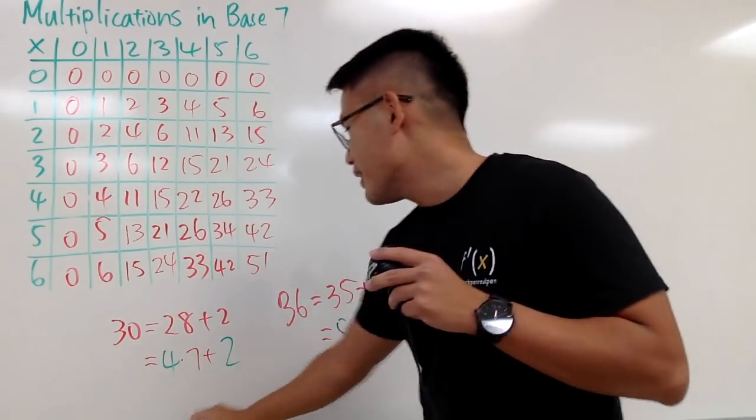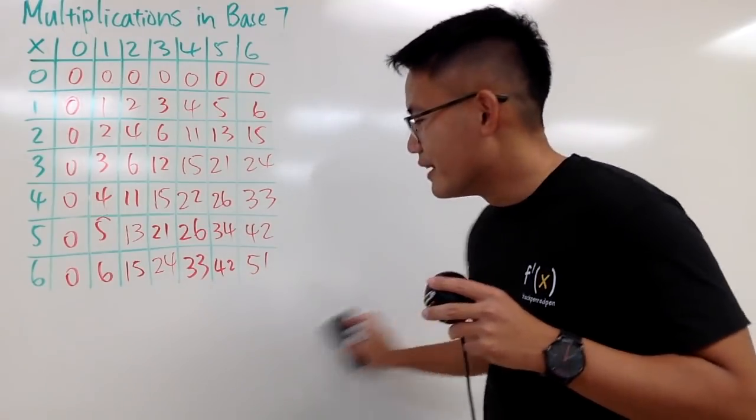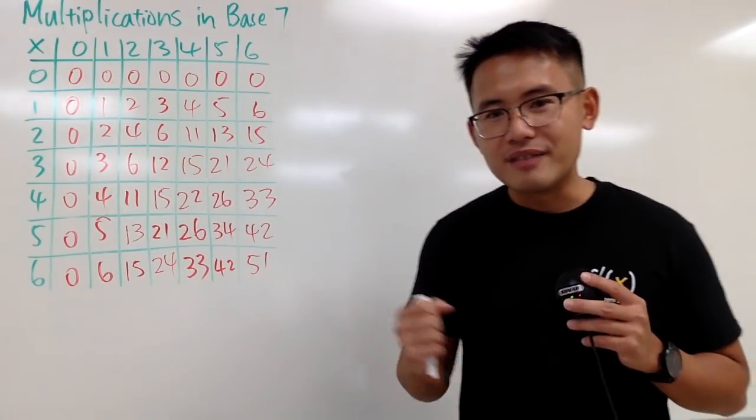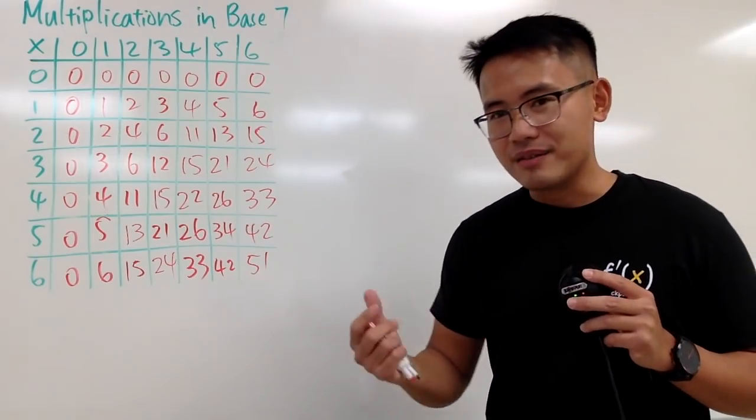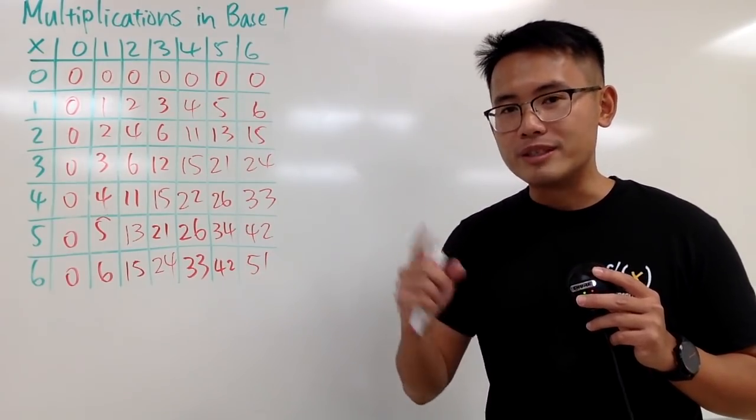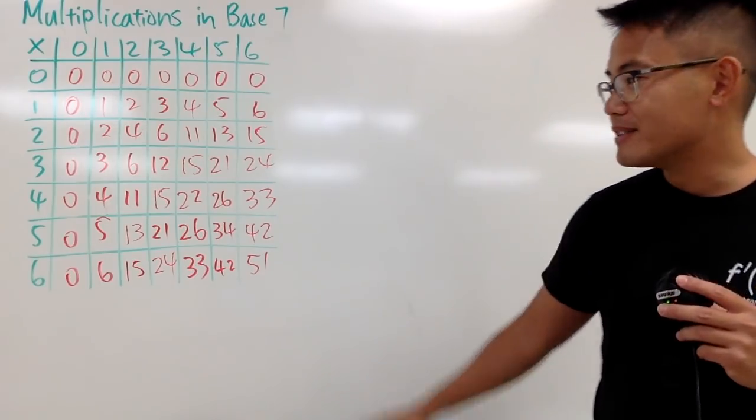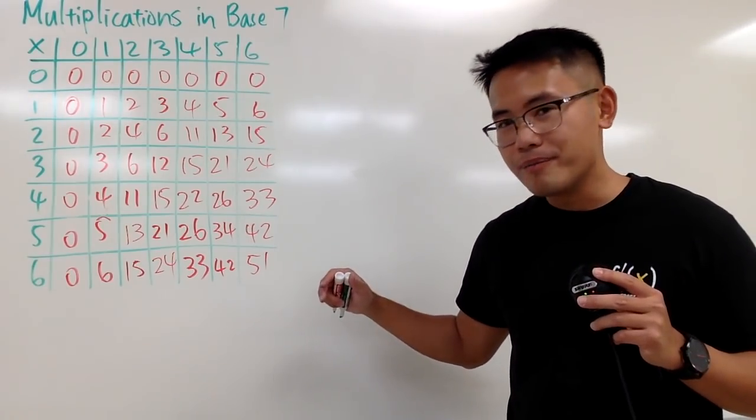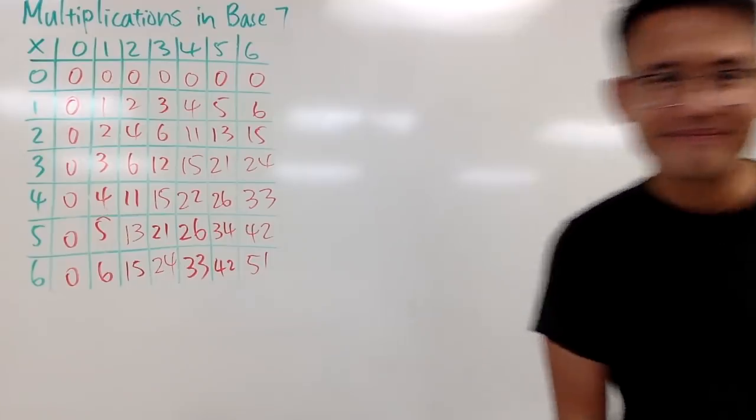All right, so this right here is pretty much it. This is the times table in base 7. And I will be using this to do my other video. I will show you guys how to change between two bases without going to base 10. So watch out for my next video. But at the moment, this is it. Thank you.